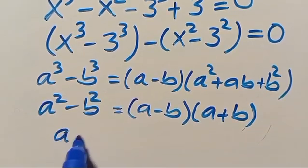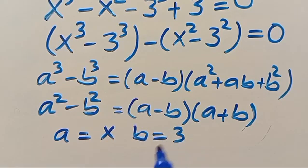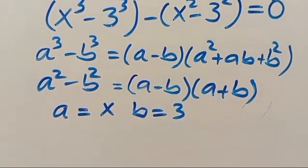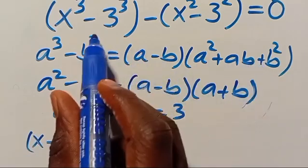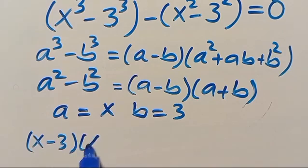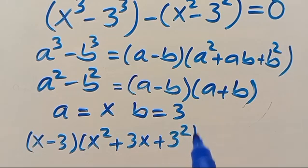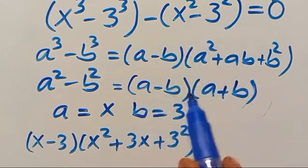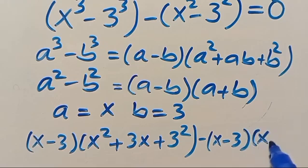So when we compare, we realize that for x to the power of 3 minus 3 to the power of 3, we have a equals x and b equals 3. Then, substituting everything, we get x minus 3 multiplied by x squared plus 3x plus 9. And for the second group, applying the difference of squares identity, we get minus times x minus 3 times x plus 3, equals zero.